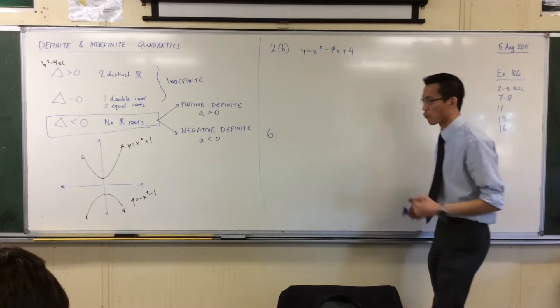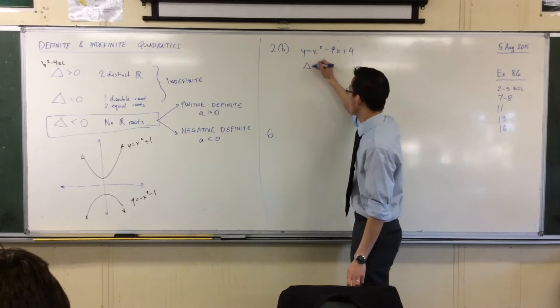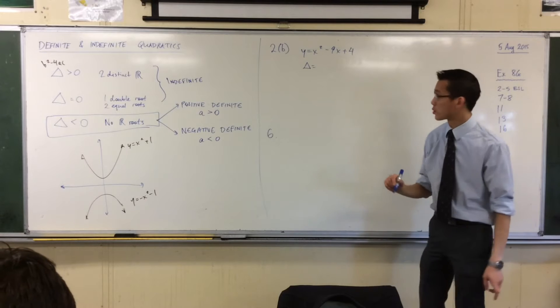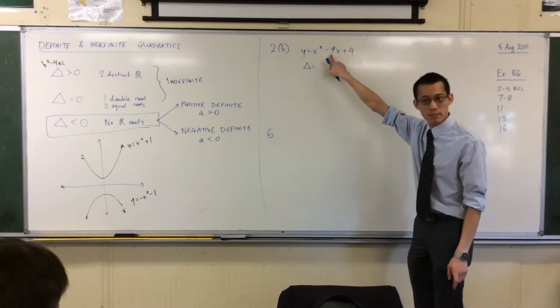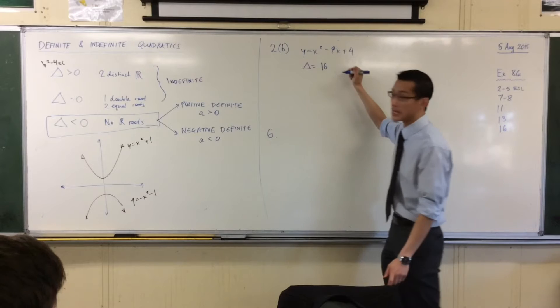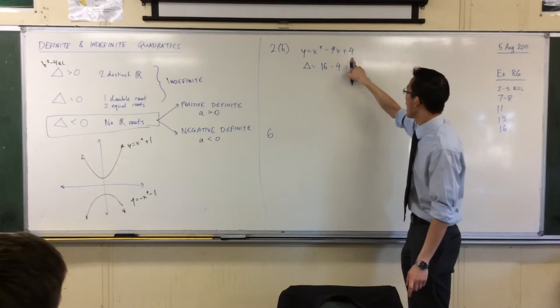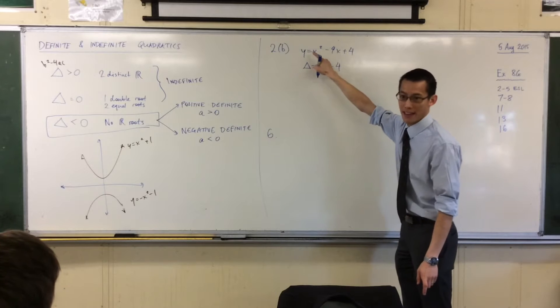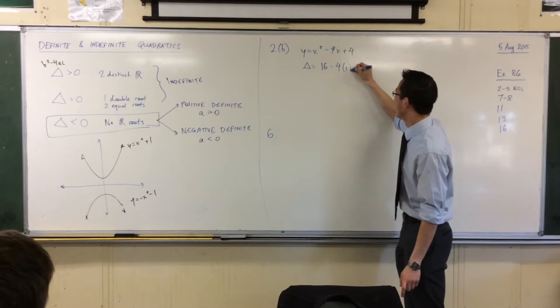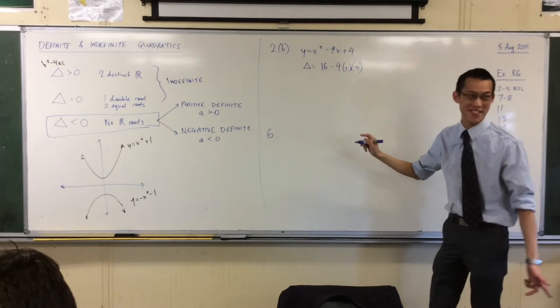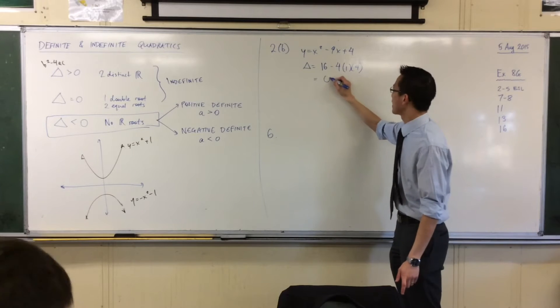So we want to become very comfortable with working out this discriminant. Let's give it an equals. There's my b squared, or my b rather. So b squared is 16 minus 4ac. So 1, 4. Are you happy with that? So I'm getting 0 out of that.